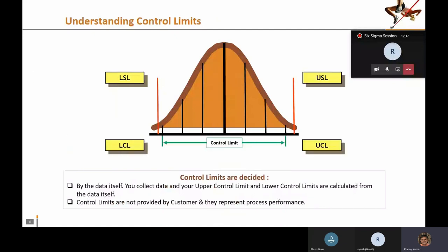Especially in interviews, you will be asked: what is the difference between a specification limit and a control limit? Control limits are not provided by the customer — they actually represent the process performance.